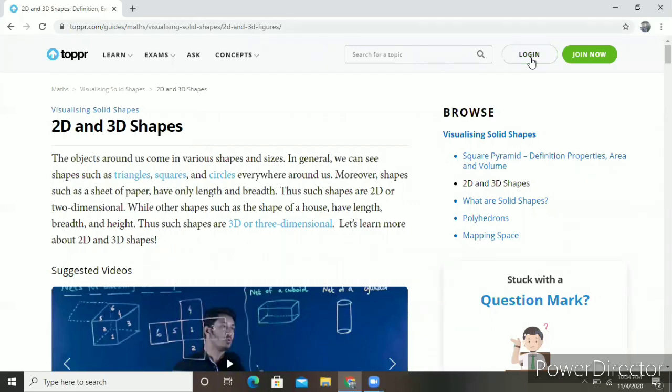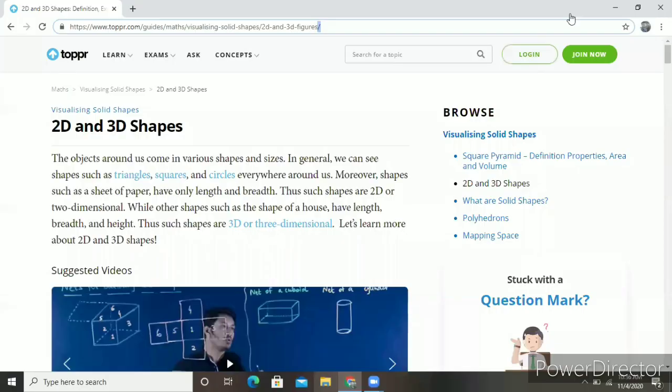Good morning to all my dearest friends. Today we will discuss 2D and 3D shapes. The objects around us come in various shapes. In general, we can see shapes such as triangle, square, and circle. Everything around us has shapes.